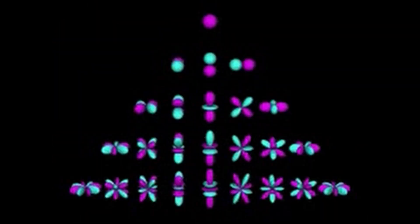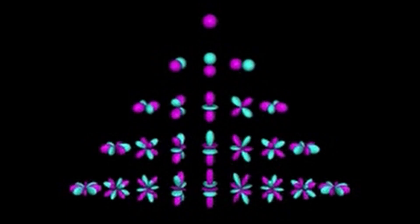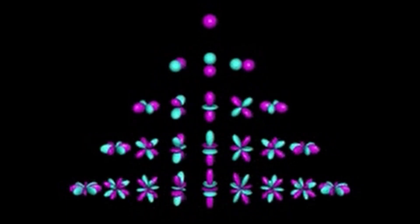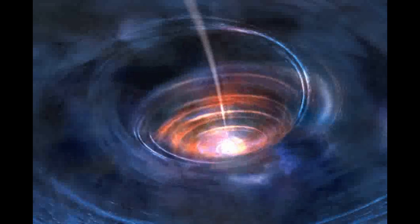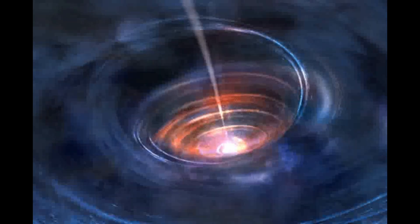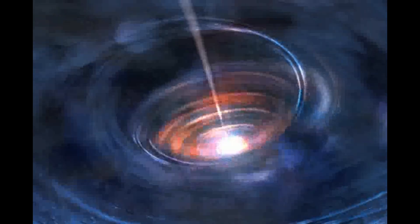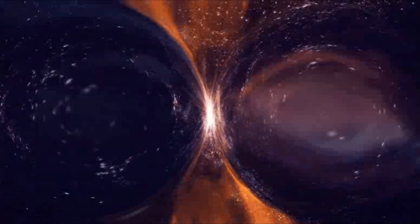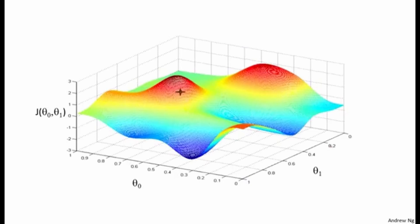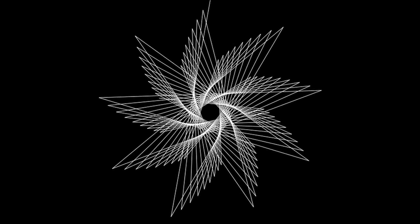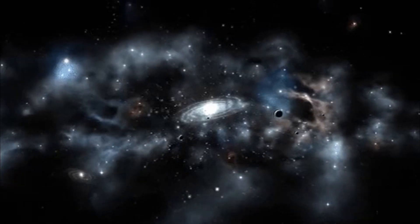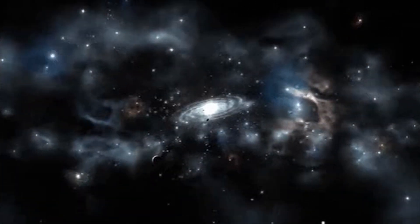Complexity entropy can be calculated using various methods, such as fractal dimension, algorithmic complexity, or network theory. As you can see, entropy is a very broad and versatile concept that can be applied to many different situations and phenomena. It helps us understand how systems change over time, how they interact with each other, and how they create and transmit information. Entropy is also a fundamental property of the universe, reflecting the tendency of matter and energy to spread out and become more uniform. Entropy is not necessarily a bad thing, as it can also be a source of creativity, diversity, and innovation.